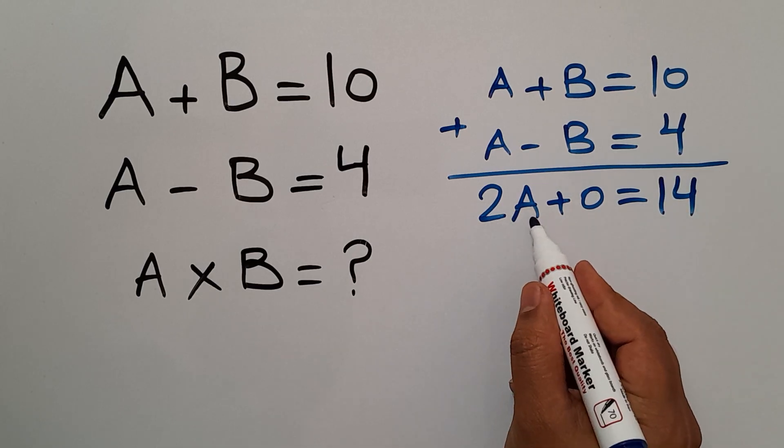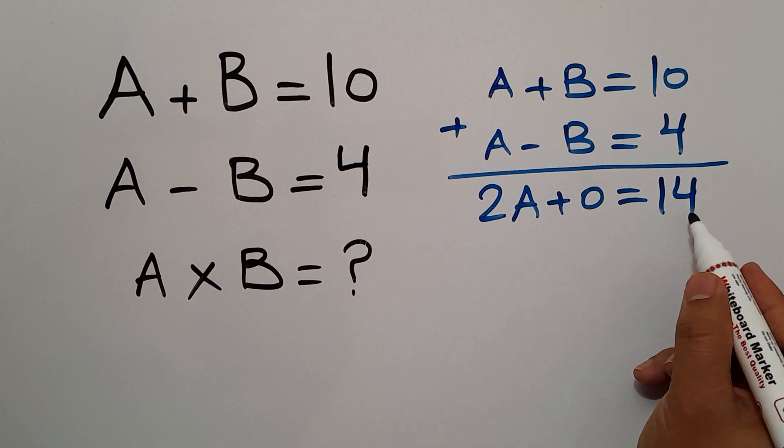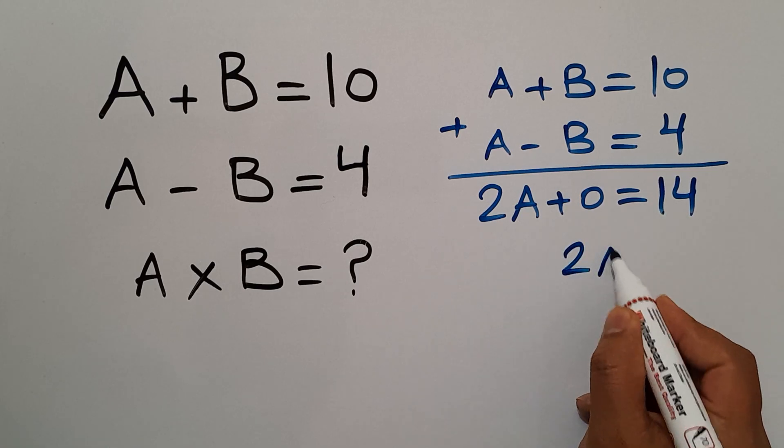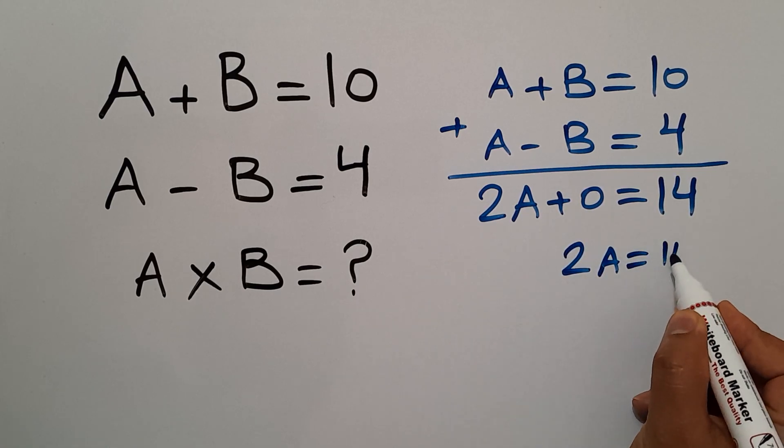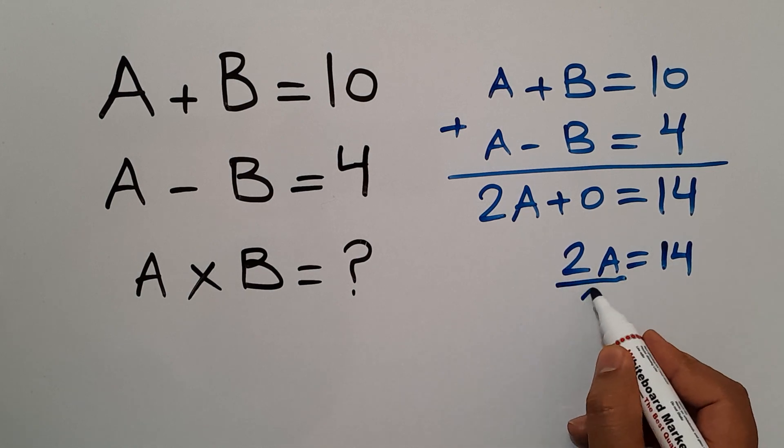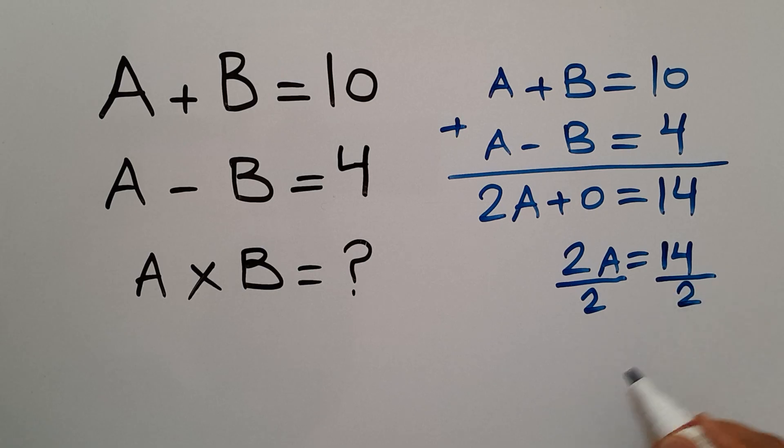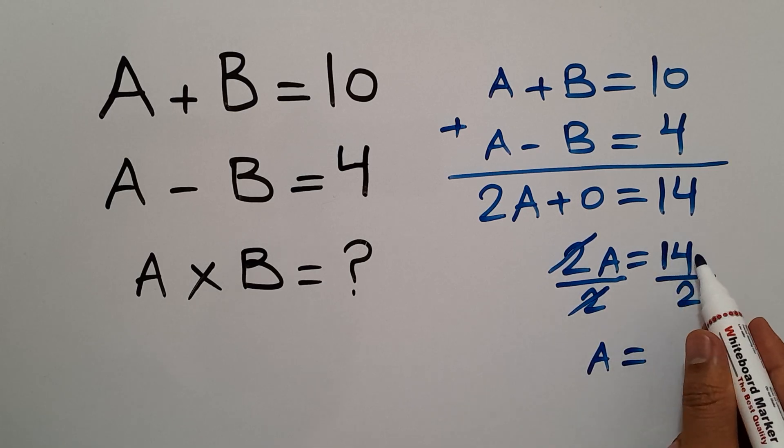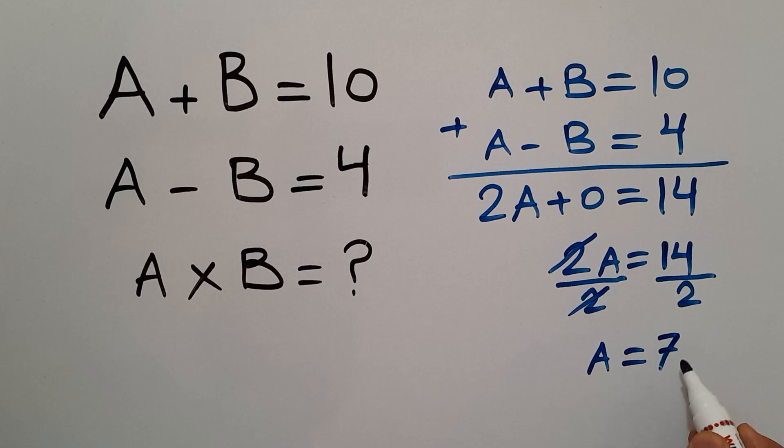We have 2 times A equals 14. Now let's divide both sides by 2. We can easily cancel these two and these two. So we have A equals 14 divided by 2 gives us 7.